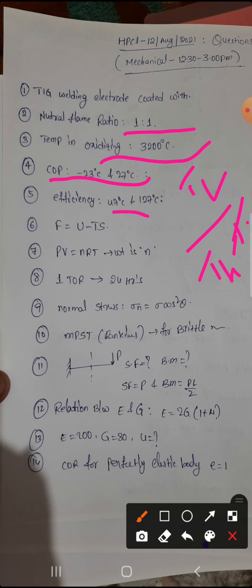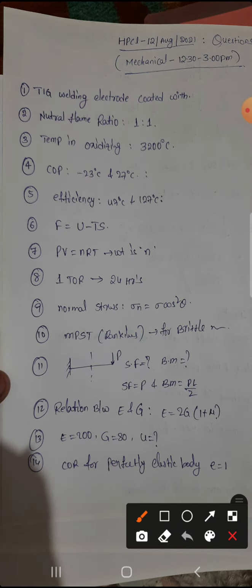Six I think you will get. Next, efficiency of the engine they are asking. One more question, here efficiency is equal to TH minus TL by TH. That one you can do it.